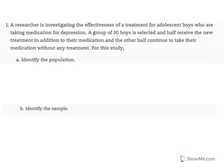This is the solution for problem 1 of chapter 1. A researcher is investigating the effectiveness of a treatment for adolescent boys who are taking medication for depression. A group of 30 boys is selected, and half receive the new treatment in addition to their medication, while the other half continue to take their medication without any treatment.